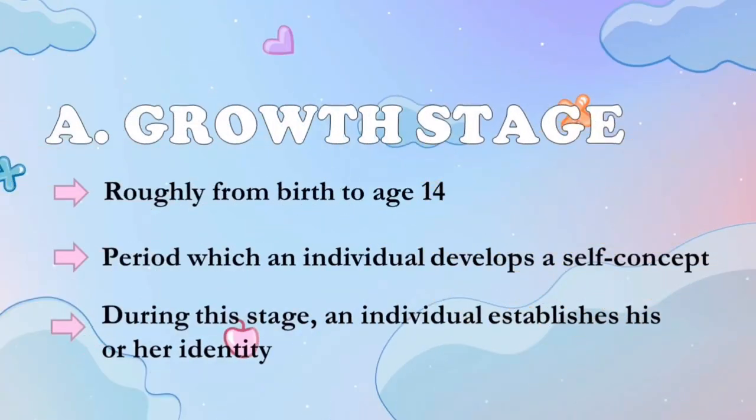First is the growth stage, roughly from birth to age 14 — a period in which an individual develops a self-concept. During this stage, an individual establishes his or her identity through interaction with others. Basically, during this stage, a person's character is being formed — they begin to see who they are in society and what their purpose is. Next is the exploration stage, roughly from age 15 to 24. During this stage, a person explores what jobs they might want to do, matching occupational alternatives with personal preferences and abilities resulting from education, leisure activities, and work.